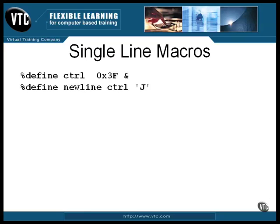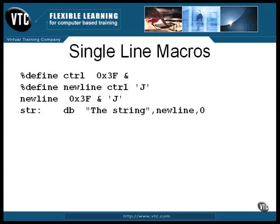The first line defines the macro named control as the value of 0x3F and an ampersand. The second line uses the hex value as a mask to clear the bits and defines the newline character as being the value 0x3F ANDed with the ASCII value of J, which results in control J, which is the value 10, the same as before.